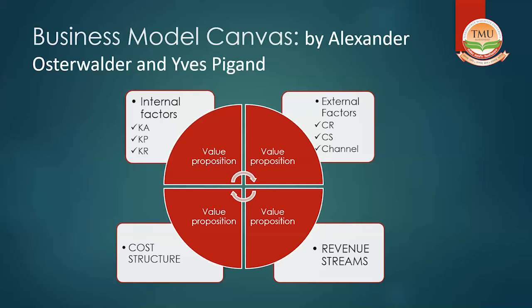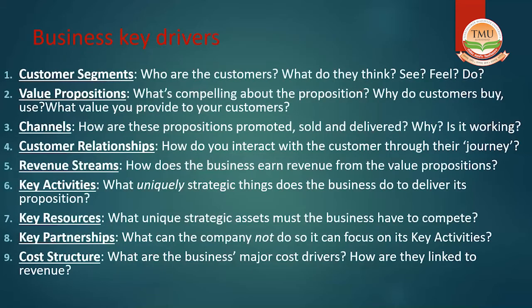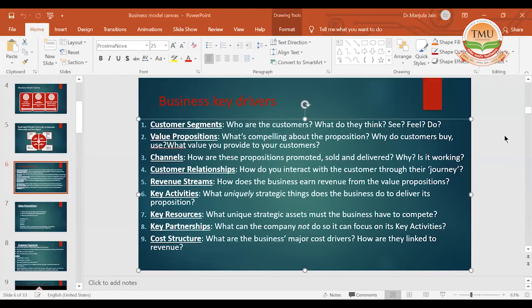When we talk of these factors, we all have to answer certain questions. Let us take an example to understand how we can design this business model canvas. Taking an example will be easier for everyone. Let us take one example known to everyone — Amazon. I think everyone is familiar with Amazon's e-commerce services. How Amazon came up with its business in the present form and what could be the probable business model canvas is for everyone to think about.